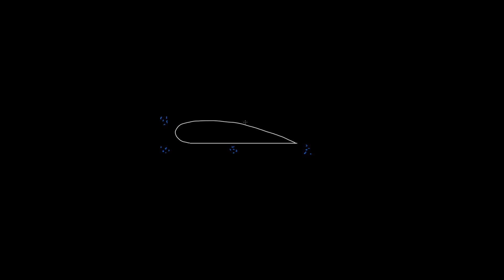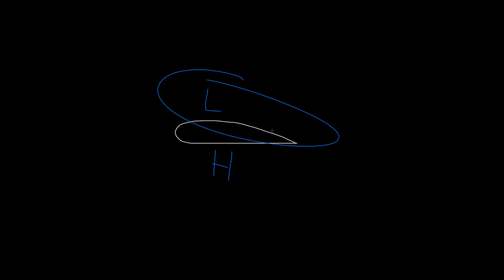The air actually speeds up to fill in that gap that would otherwise exist. By speeding up, it stretches out — the same amount of air has to fill a larger area, so the air molecules come less close together. You might have five molecules in a given space on the bottom, but only two in that same space on the top. We call this low air pressure on top and high air pressure on the bottom.